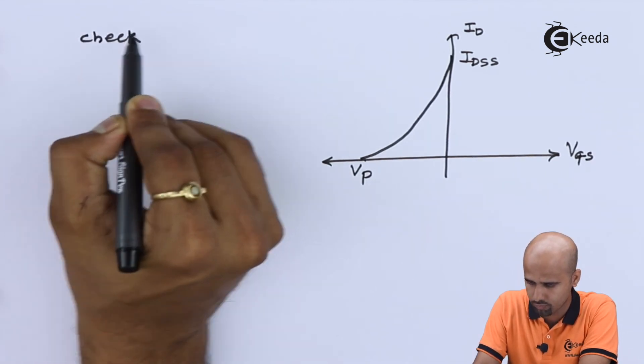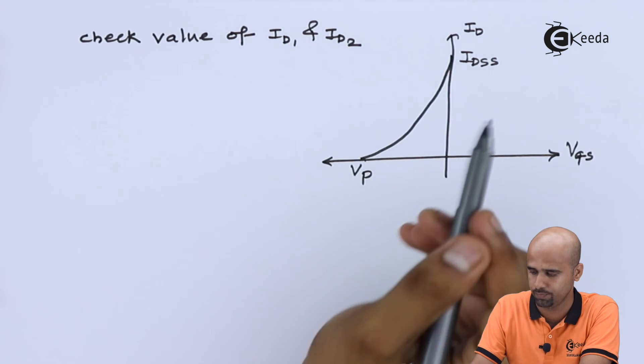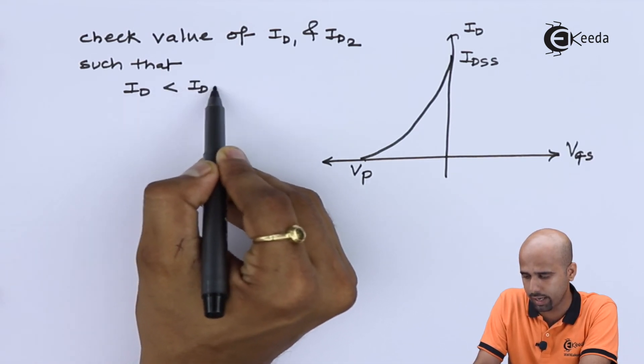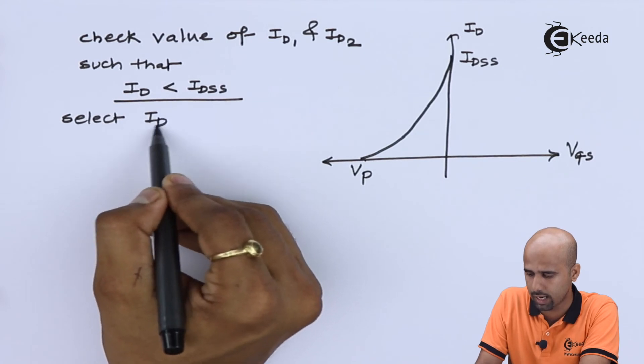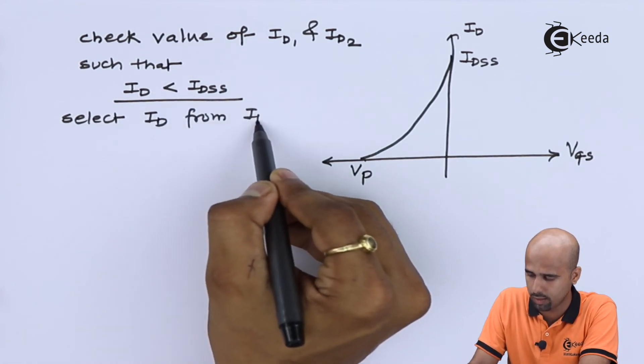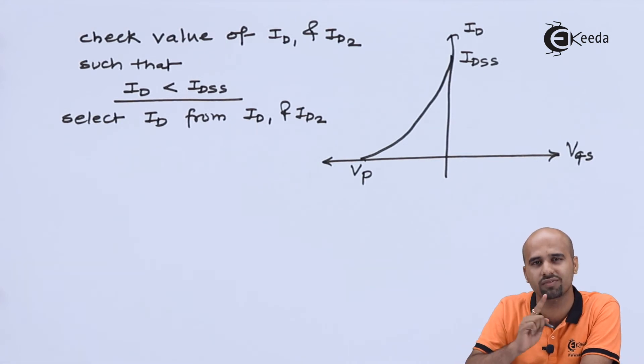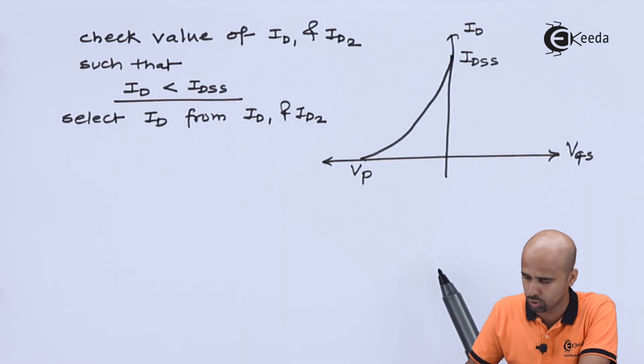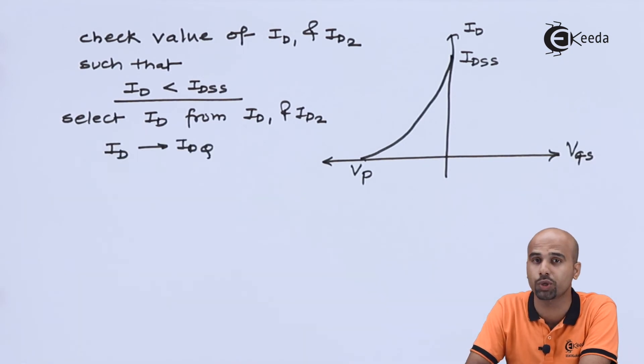So we will say that check value of ID1 and ID2 such that ID should be less than IDSS. So here we will get, select ID from ID1, ID2, and hundred and one percent you will be getting only one correct answer and another will be out of scope. Either it is beyond IDSS or we will be getting negative value of ID. So one of the value is always correct and that we will take it as IDQ, that is one of the Q point parameter.